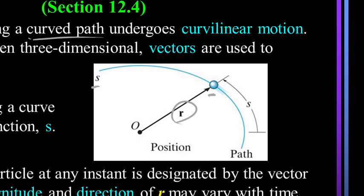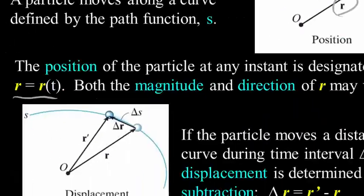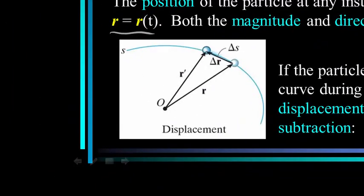Both the magnitude and direction of R may vary. If the particle moves a distance delta S along the curve during the time interval delta T, the displacement delta R is determined by the vector subtraction R prime minus R.